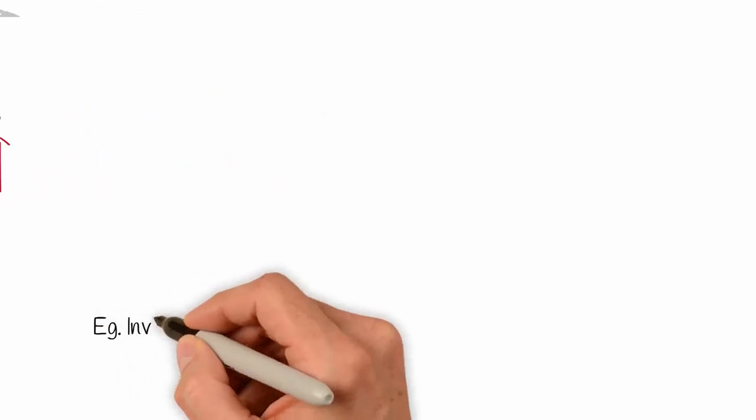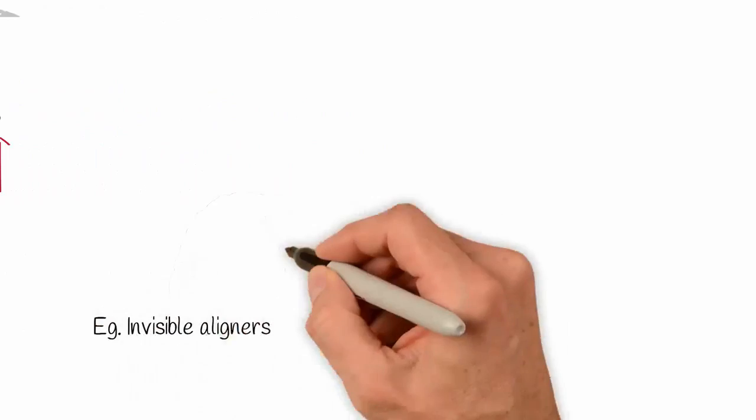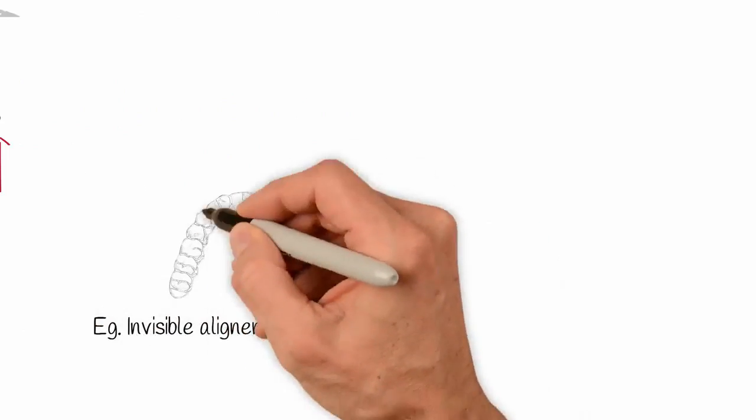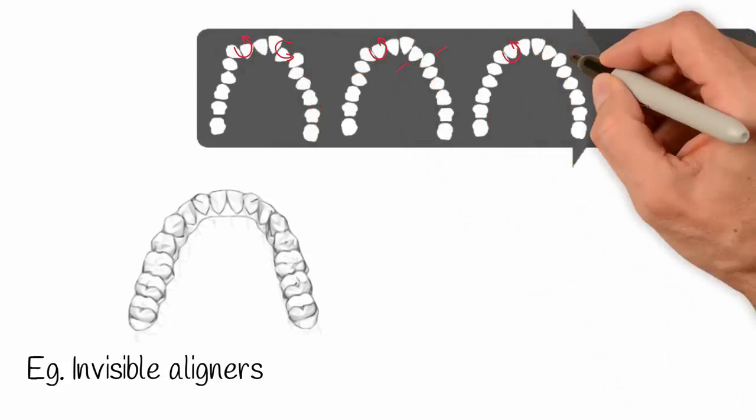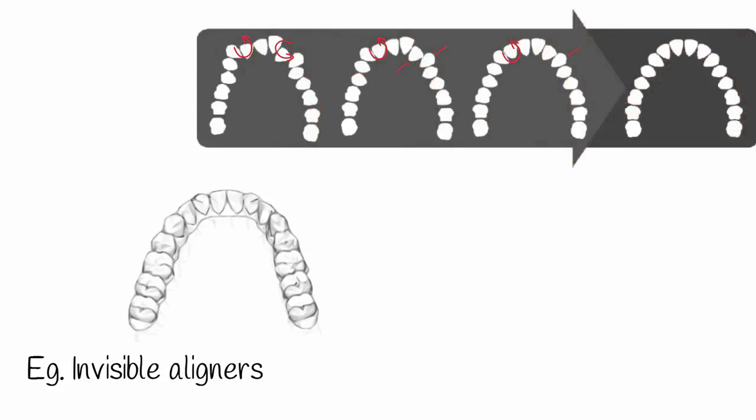Other examples of appliances that are force-driven include the invisible aligners. Yes, their main target is the application of controlled force to perform specific dental movements. That is, if there is no appropriate planning of the desired sequence of movements, the treatment with the aligner will certainly not succeed.